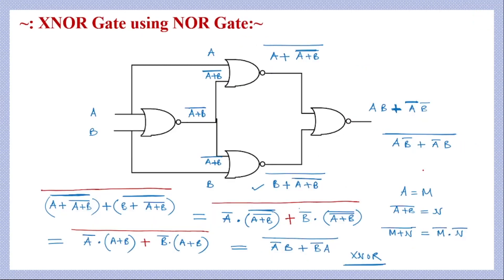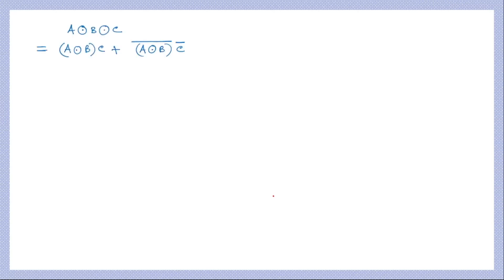Now we will see the main part of today's class. Before that, we will revise the implementation of the XNOR gate using NOR gates, which we have seen in one of our earlier classes where I discussed the implementation of all gates using NOR gates — you can refer to that class. Next, before implementing the full adder using nine gates, we will look at two key simplifications.